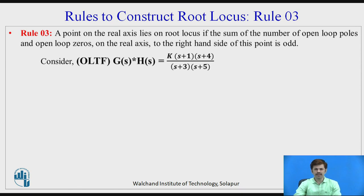Rule 3: A point on the real axis lies on the root locus if the sum of the number of open loop poles and open loop zeros on the real axis to the right-hand side of that point is odd. If we take a section between the roots and count the elements to the right-hand side, and if the count is odd, then the root locus exists between those two roots.